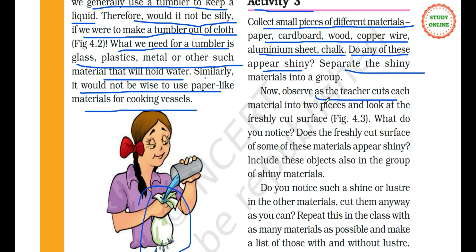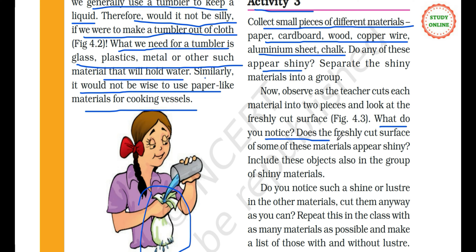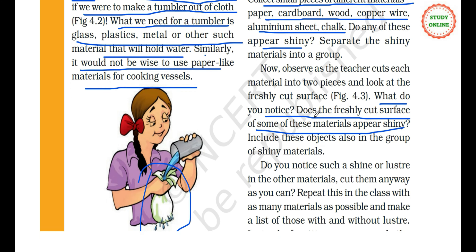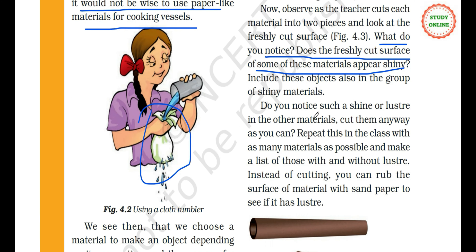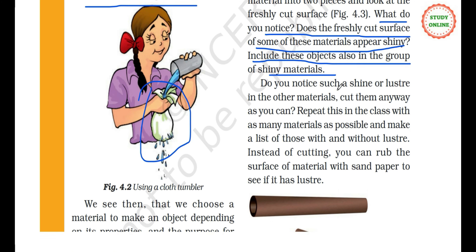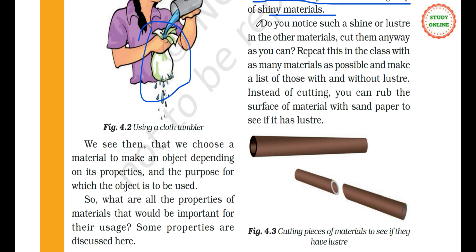Observe as the teacher cuts each material into two pieces and look at the freshly cut surface. Jab hum freshly kisi cheez ko kaatten hain to uska shine zyada dikhega. Does the freshly cut surface of some of these materials appear shiny? If they appear shiny after cutting, include those objects also in the group of shiny materials.